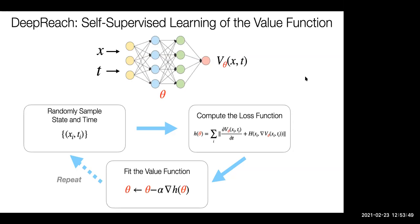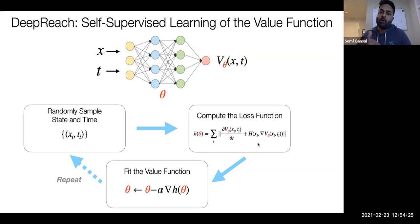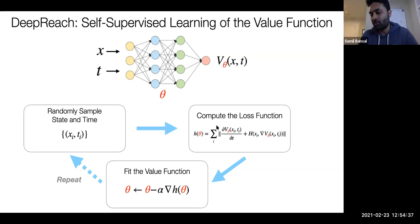A student asks why the loss function being zero corresponds to safety. The reasoning is that once the loss is zero, we've obtained the true value function — for the true value function, the PDE term should indeed be zero, as that's the condition derived from dynamic programming. Sylvia adds: when written out fully, it's the partial with respect to T plus the inner product between the partial with respect to state and the dynamics, optimized — which is the Hamilton-Jacobi-Isaacs PDE derived in class, and in theory it should equal zero.